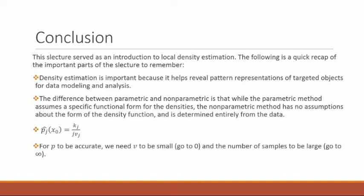To conclude, here is a quick recap of the important parts of this lecture. First, density estimation is important because it helps reveal pattern representations of targeted objects for data modeling and analysis. Second, while the parametric method assumes a specific functional form for the densities, the nonparametric method has no assumptions about the form of the density function and is entirely determined from the data. Third, the probability density function is the number of data points which falls into the region divided by the total number of samples times the volume of the small region around the data point. Finally, for P to be accurate, we need V to be small — going to 0 — and the number of samples to be large — going to infinity.